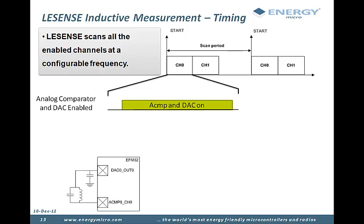The first is enabling the analog comparator and the digital to analog converter, as these are duty cycled by LeSense to save energy between measurements when they are not used. These peripherals will typically stay active during the whole measurement.